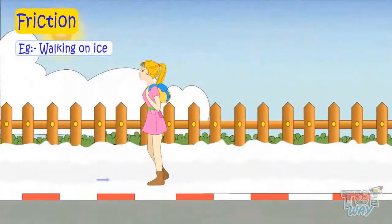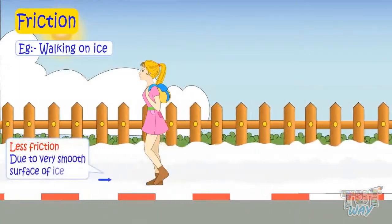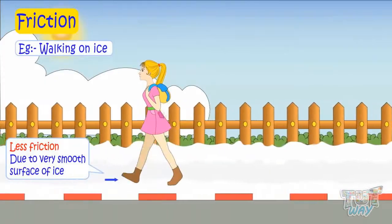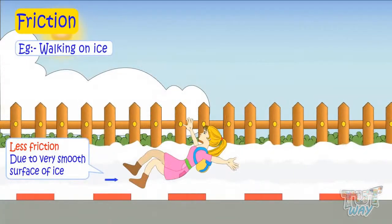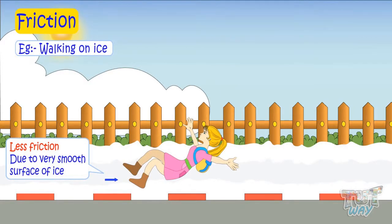Here a girl is trying to walk on a road covered with ice, and it's very difficult as the road is very slippery. Why? It is because the ice is very smooth and poses no friction, and that makes the surface slippery.